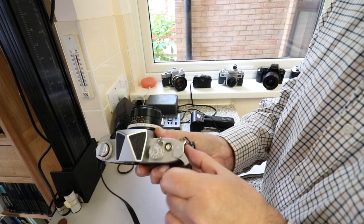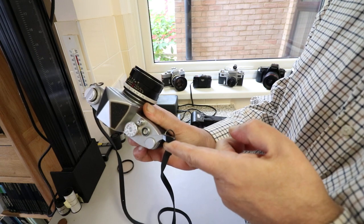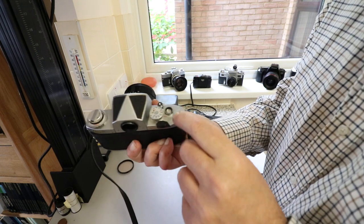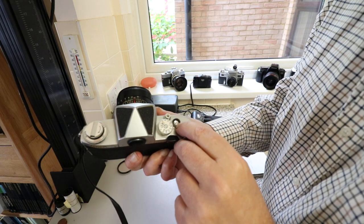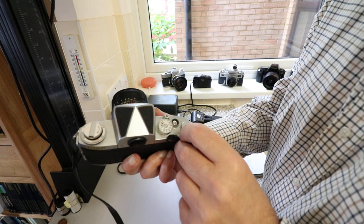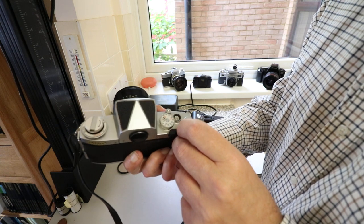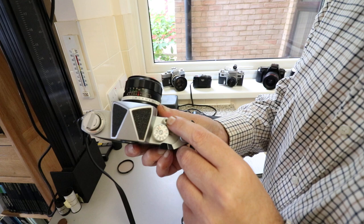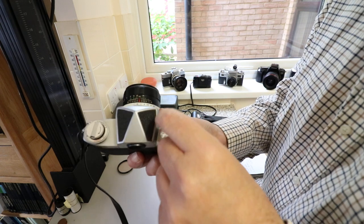Let's move to the top plate. We have the film advance, which is quite a long throw. We have a frame counter with a magnification bubble on top that makes it quite difficult to read. We have a shutter release button.